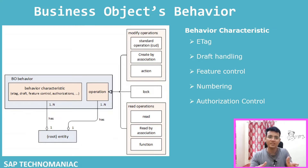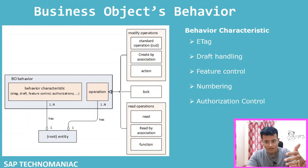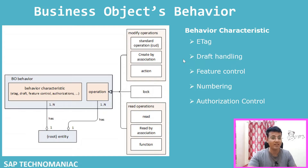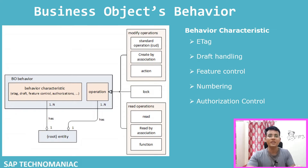Regarding behavior characteristics, apart from modifications and field properties, we can define things like ETags for your business object. We also have draft handling, feature control, numbering, and authority control - these are all characteristics we define in the behavior definition. I'm giving an overview here; we will go into detail on each of these features when we create our first RAP application.